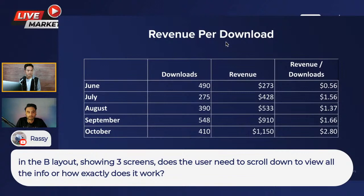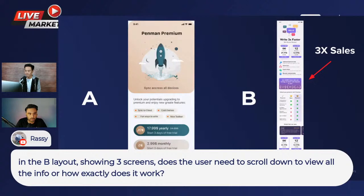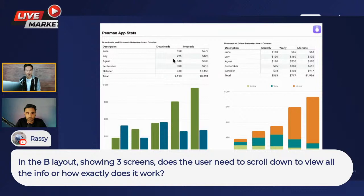There's a viewer question: on the B layout showing three screens, is it easy for you to scroll to view all the info? Yes, it's a long scroll screen. Did you do anything to the onboarding sequence as well? I actually showed the premium page at the end of the onboarding too — so when onboarding is done, the premium page is shown. That was a new addition in July when I made the change to the longer pricing page, so I show the pricing page during onboarding and then went to a longer one at the same time.